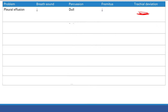Is there tracheal deviation in pleural effusion? No — only two things cause it. The second cause is atelectasis. Atelectasis is a collapse of alveoli due to obstruction of the bronchi. If you obstruct the bronchi, air doesn't go through, the alveoli don't fill, and they collapse. All alveoli supplied by that bronchus will collapse.